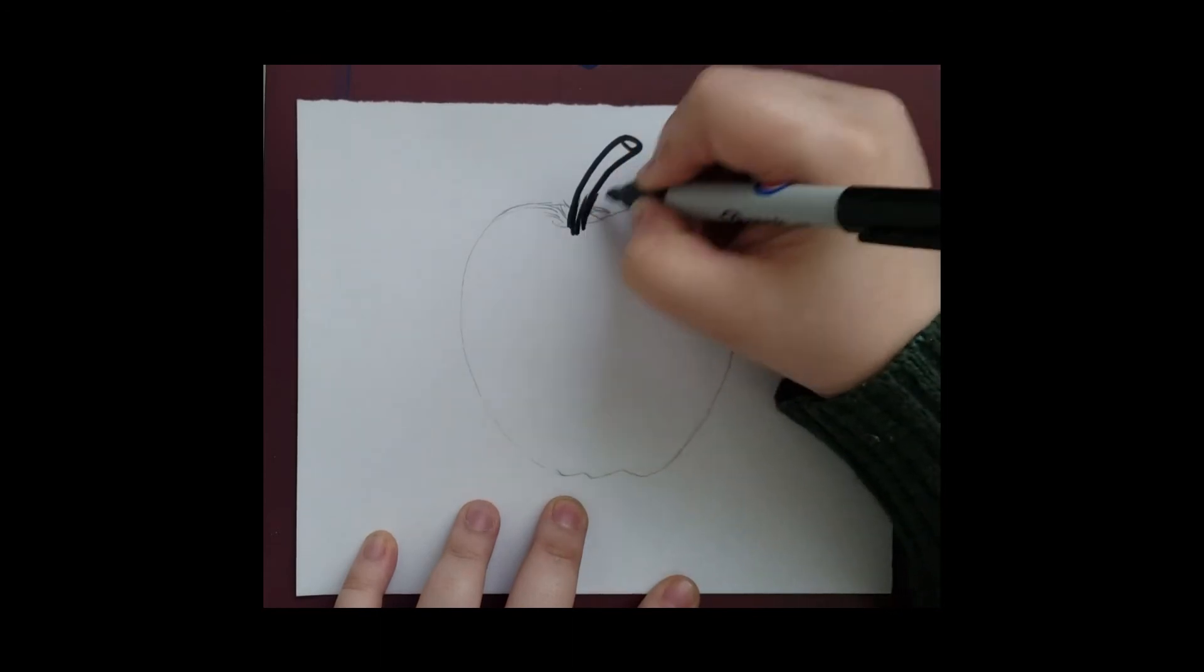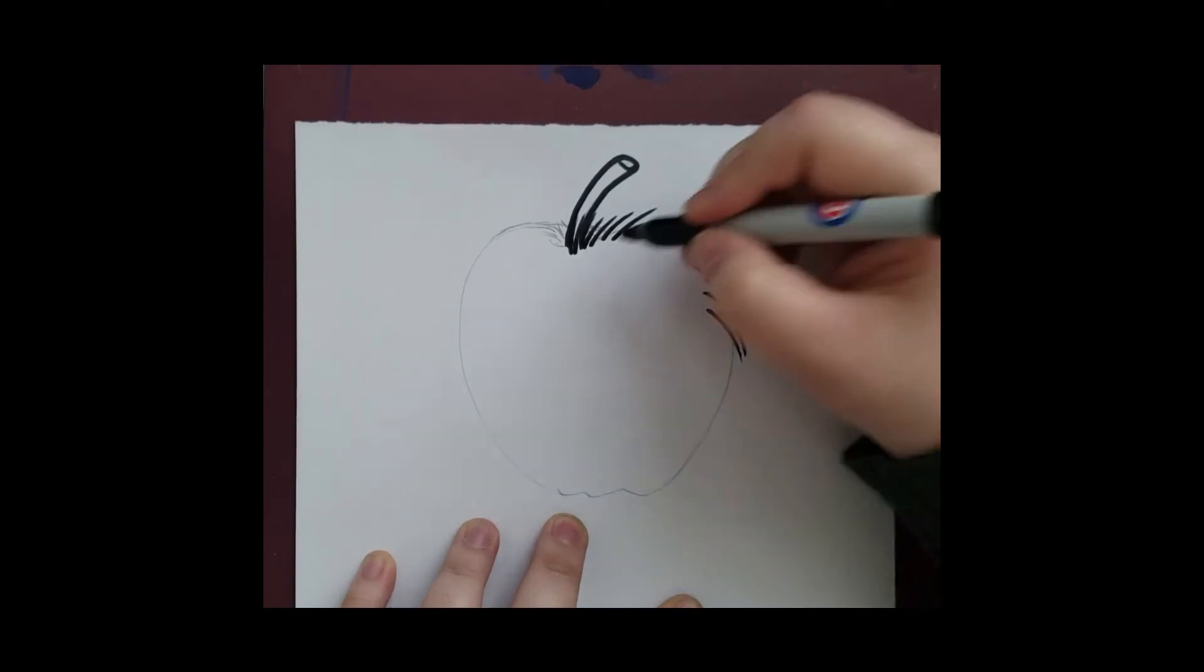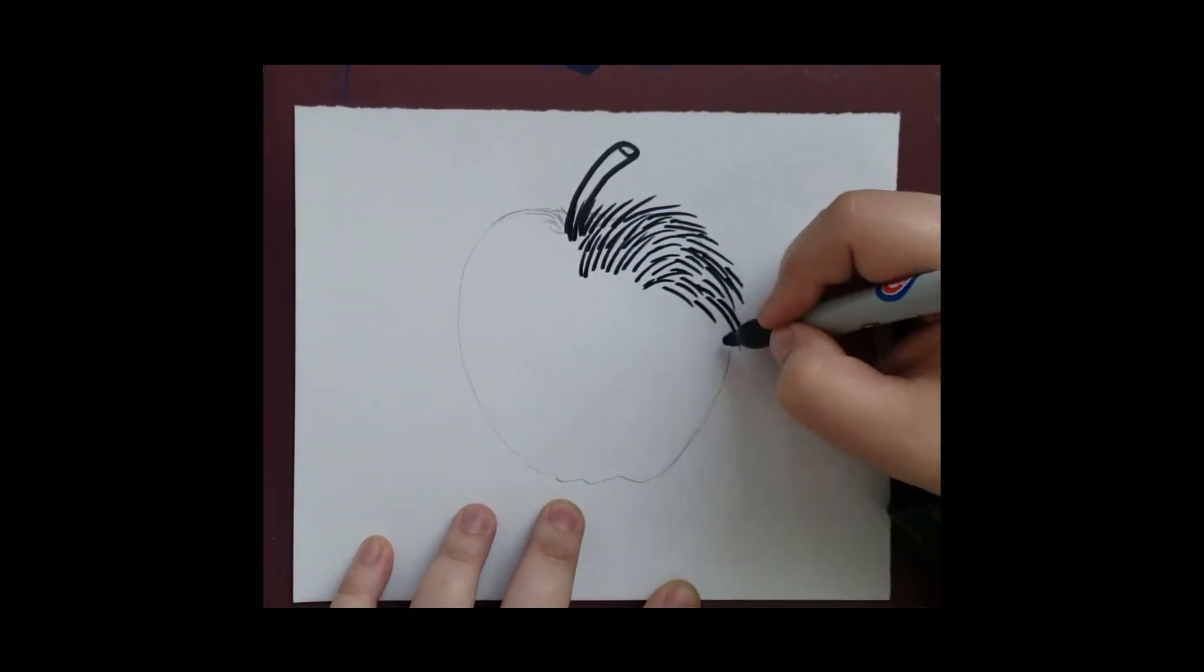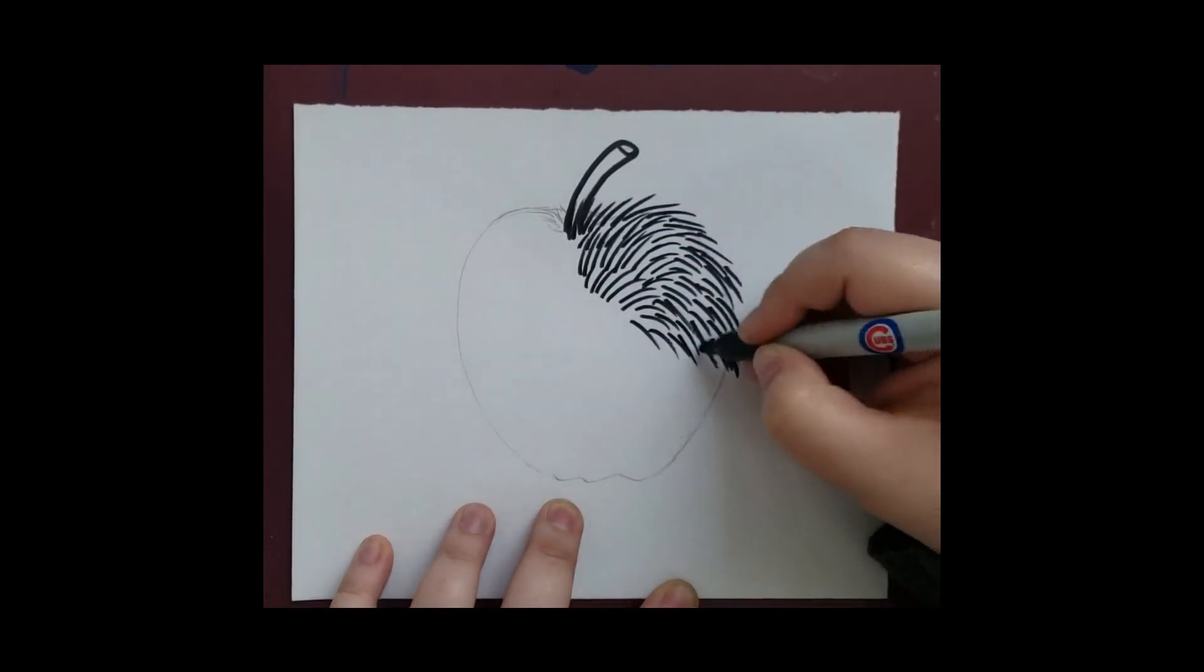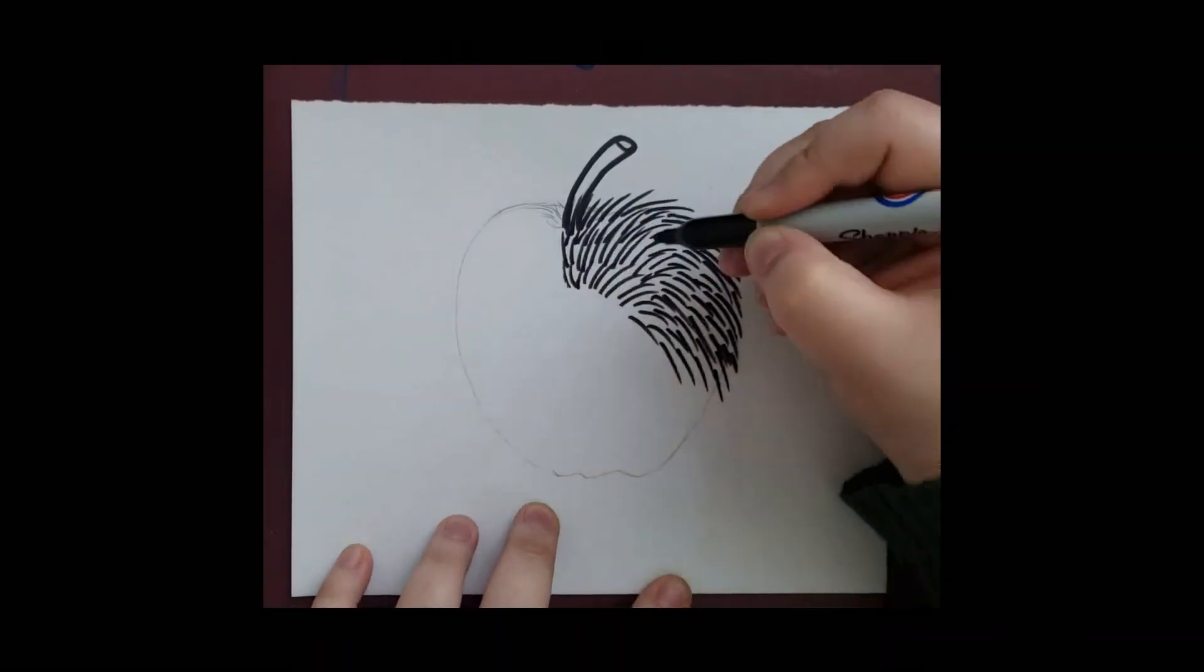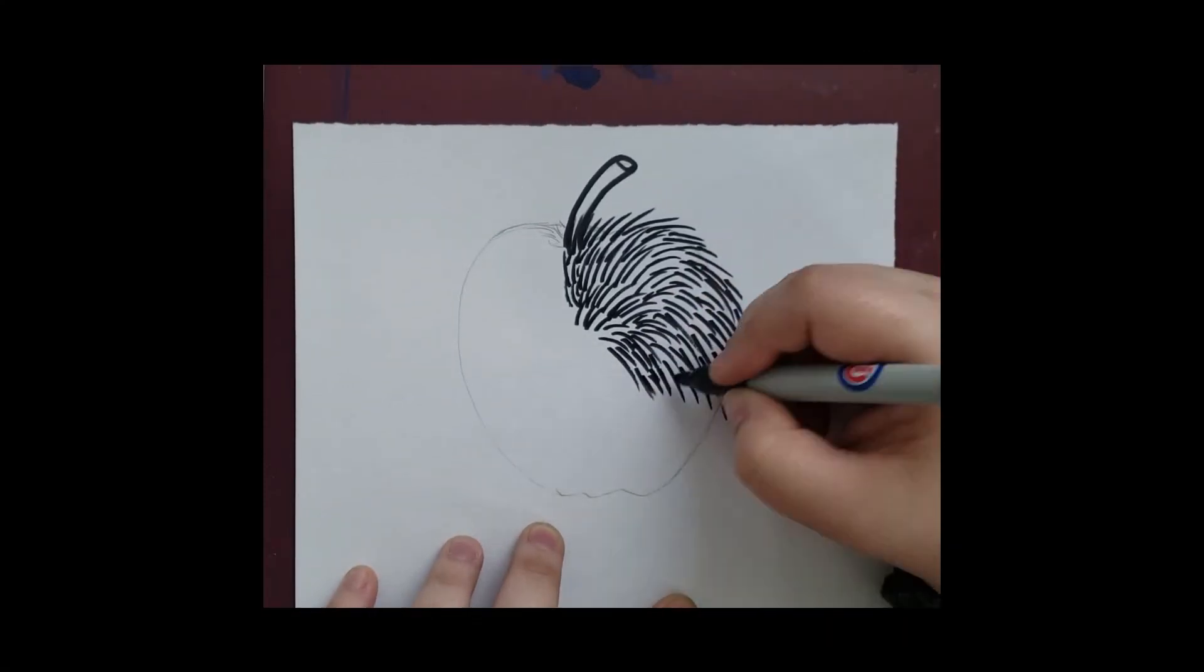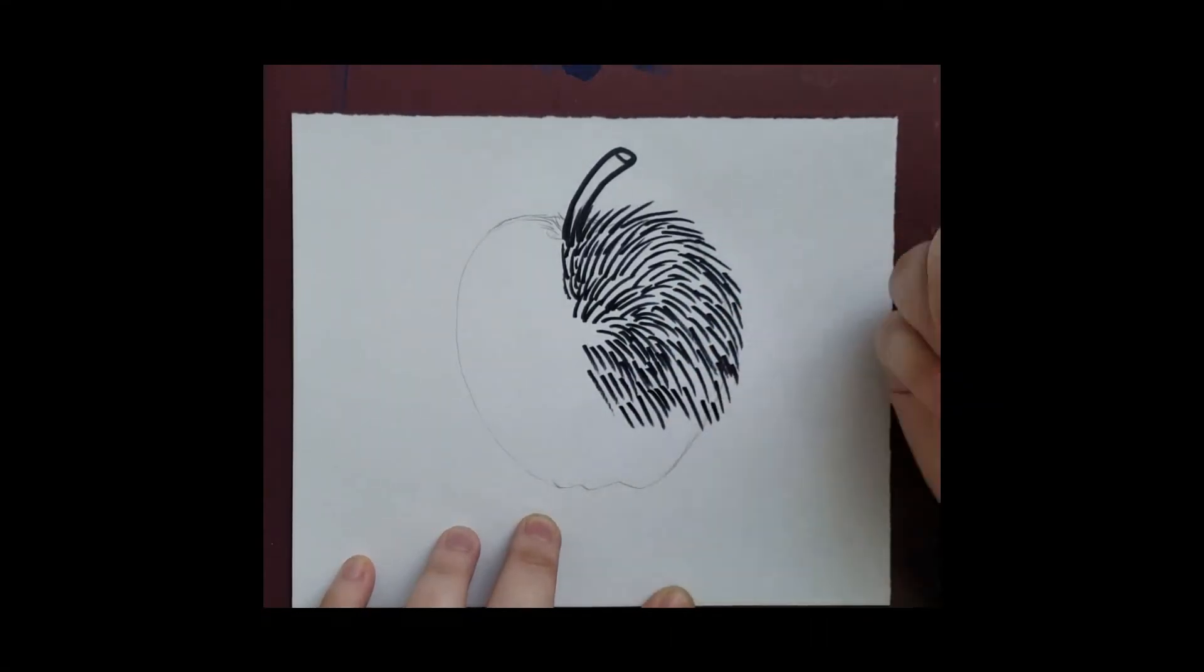Once you're done drawing your apple and the texture, you're going to start going over your lines with the black marker.